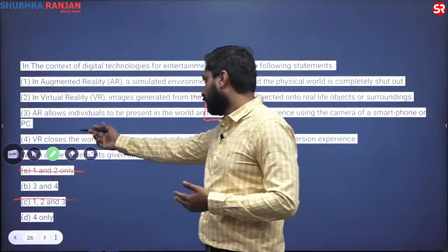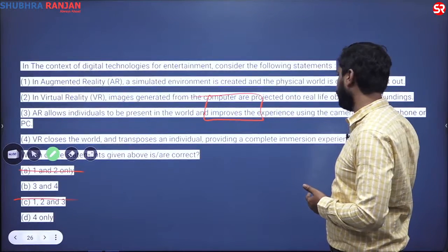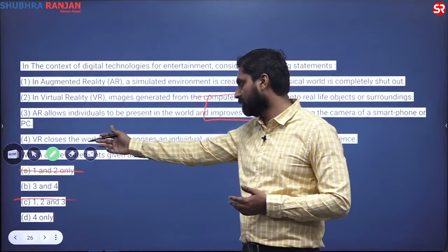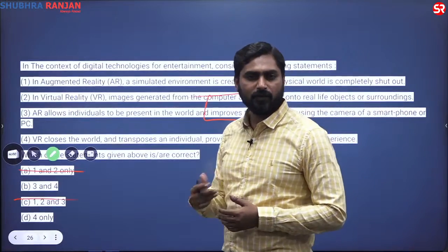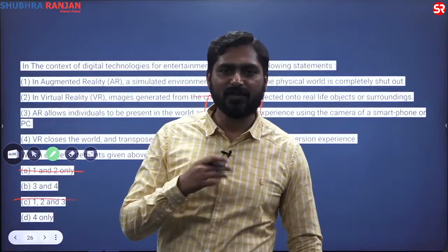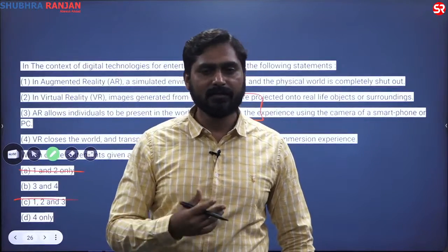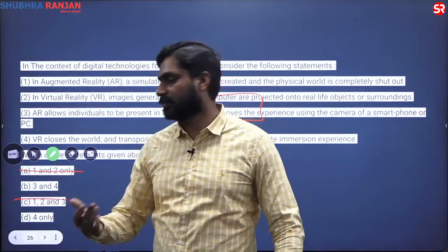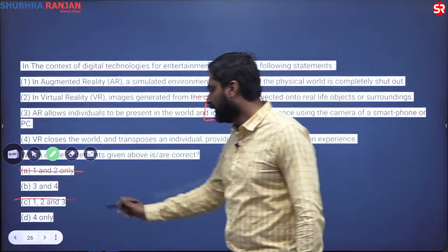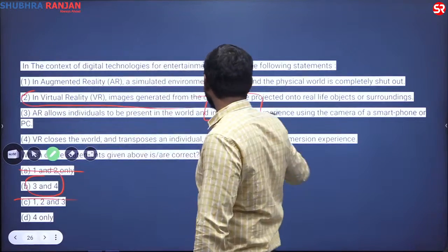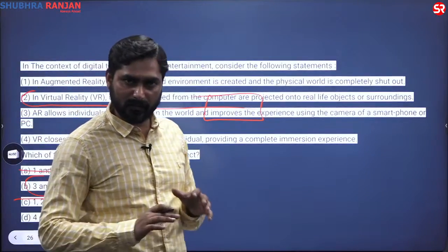Statement three: 'AR allows individuals to be present in the world and improve the experience using the camera of a smartphone or PC' — this seems correct. Statement four: 'VR closes the world and transposes an individual, providing a complete immersion experience.' In virtual reality, you take a person entirely out of reality and create a new digital world. So statement four is also correct. You reach the answer without even needing to verify the first statement.